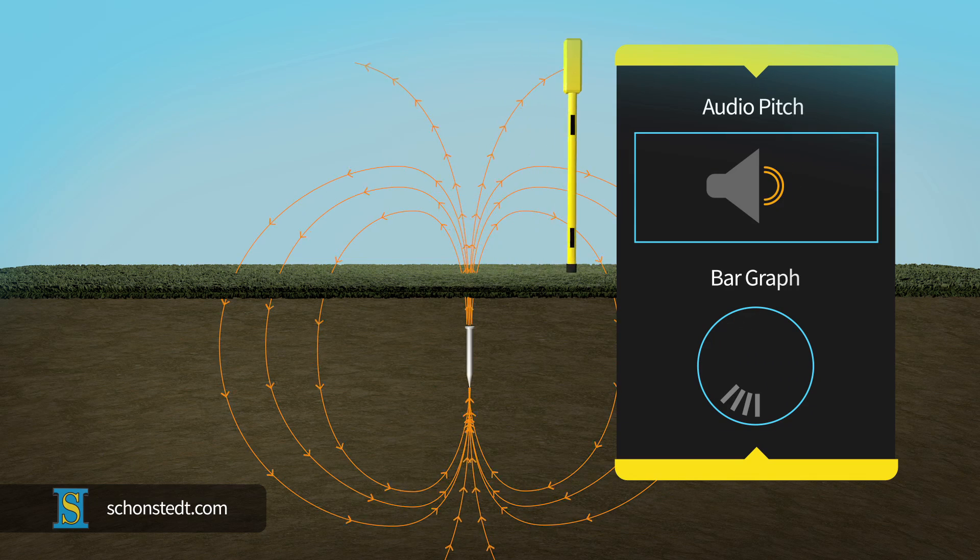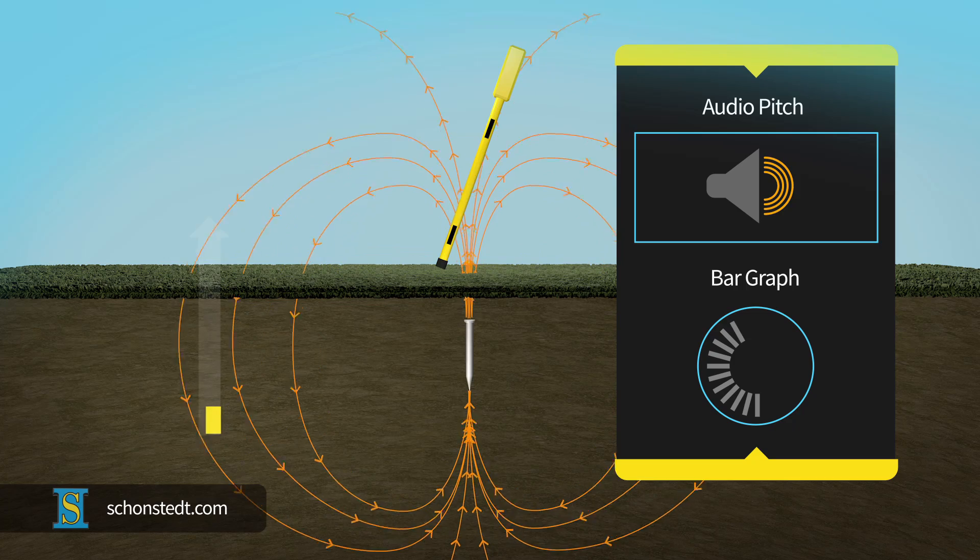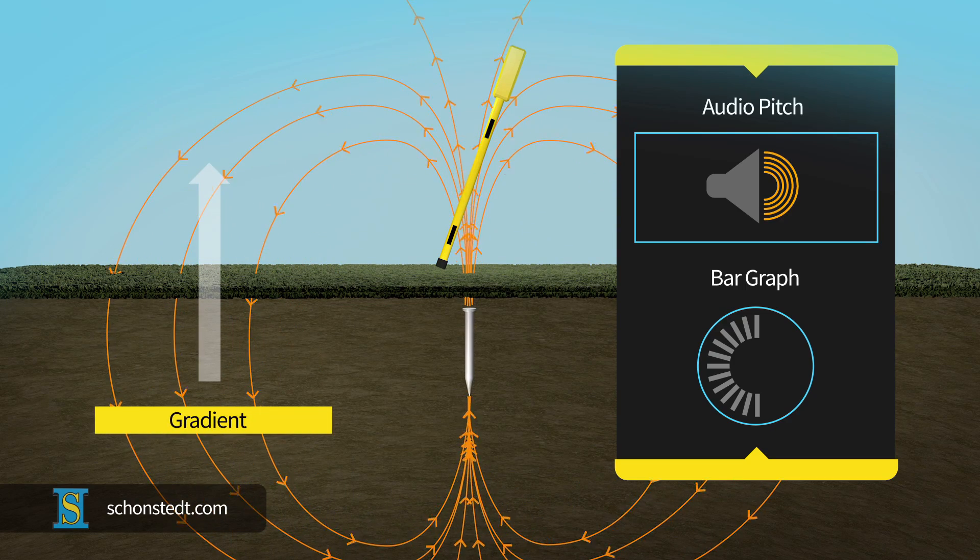Schoenstatt locators indicate the detection of a gradient to the user by changing the pitch of an audio tone, and depending on the model, with a bar graph on a visual display. The size of the buried object has an impact on the size of the magnetic field difference, or gradient.